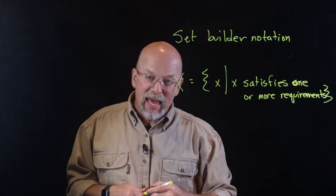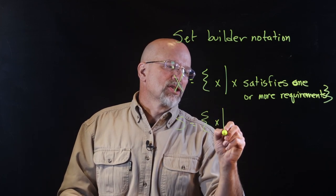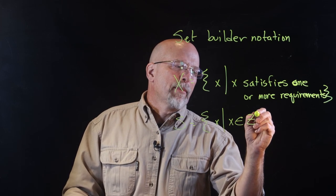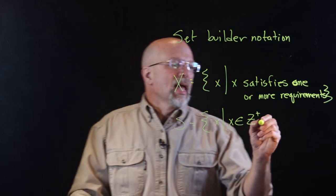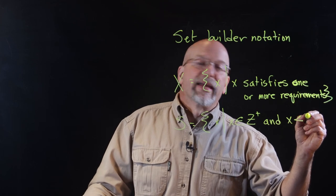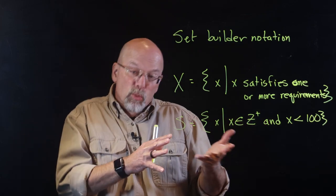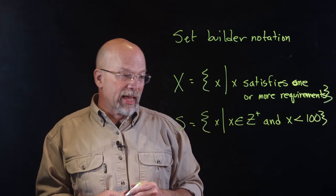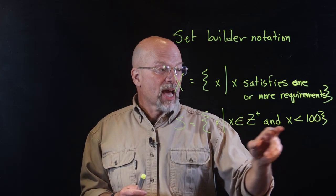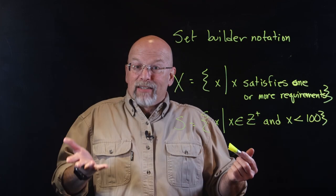Let's define a set S: {x | x is in the positive integers, and x is less than 100}. From this notation, we get an idea of what set S looks like — it's got to be a positive integer and less than 100, so you're looking at 1 up to 99.